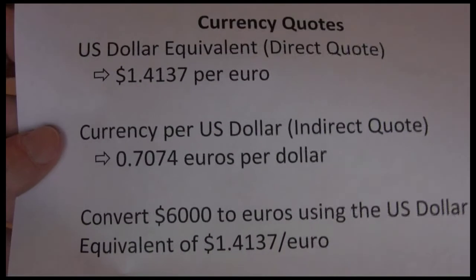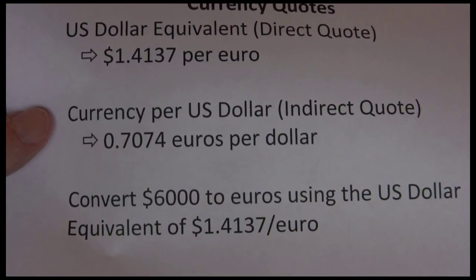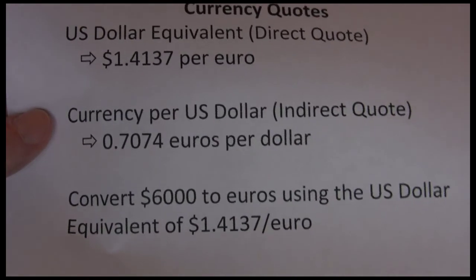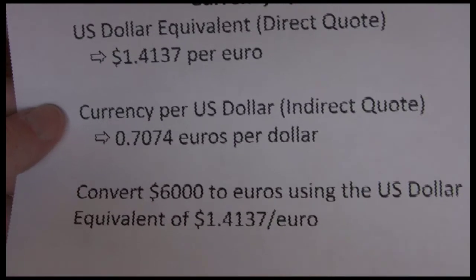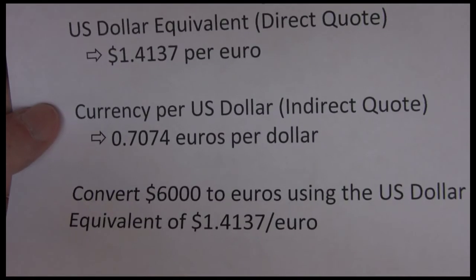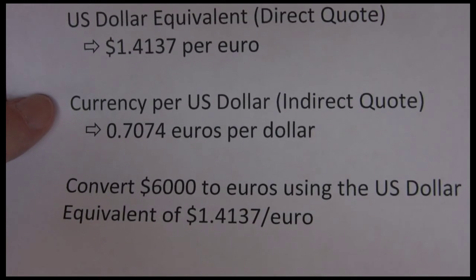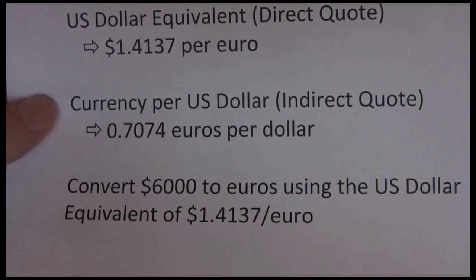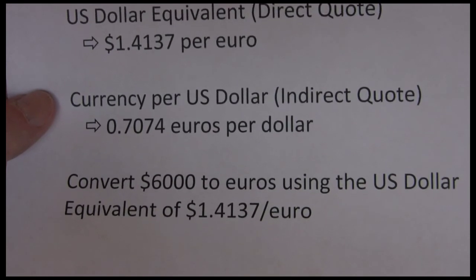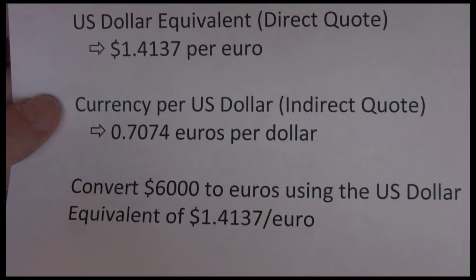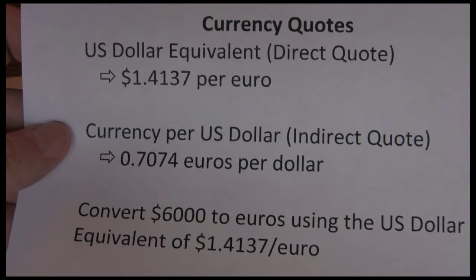Another way to look at it is called the currency per U.S. dollar, or sometimes the indirect quote. With the indirect quote, we're saying how many of the foreign currency we can buy with one U.S. dollar. In this case, one dollar is equivalent to 0.7074 euros — one dollar buys less than one euro, and one euro buys more than one dollar.